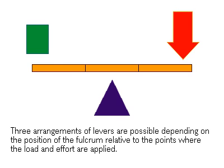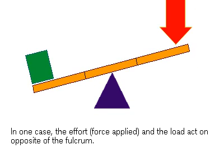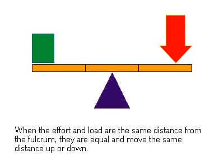There are three basic arrangements that will yield different kinds of leverage. In one case, the force and the load are on opposite sides of the fulcrum. When the applied force and the load are at equal distances from the fulcrum, the force applied will equal the force to the load. No leverage advantage is gained.